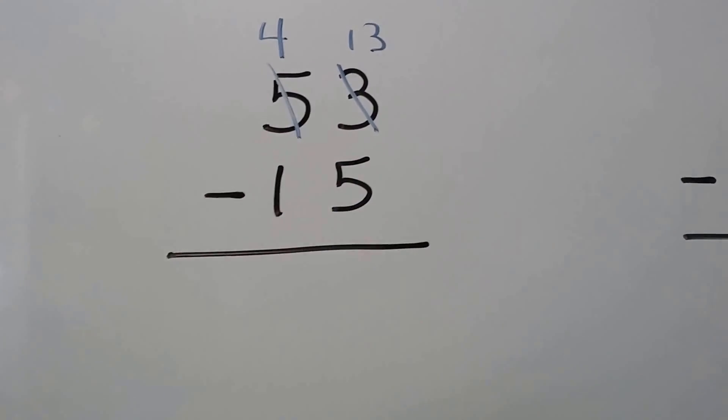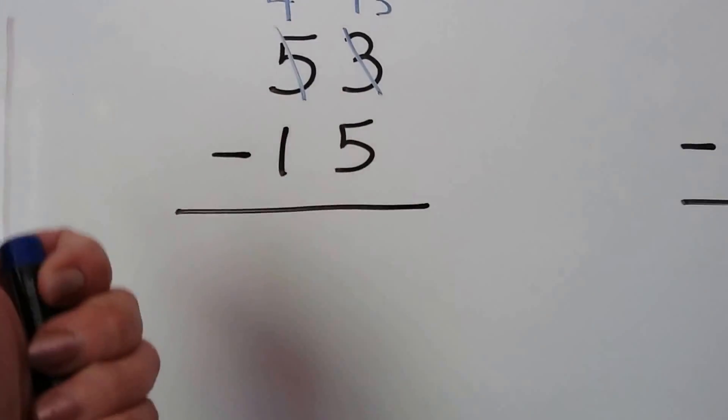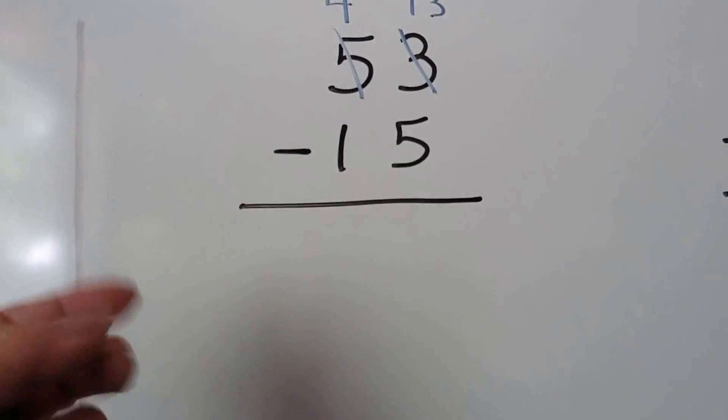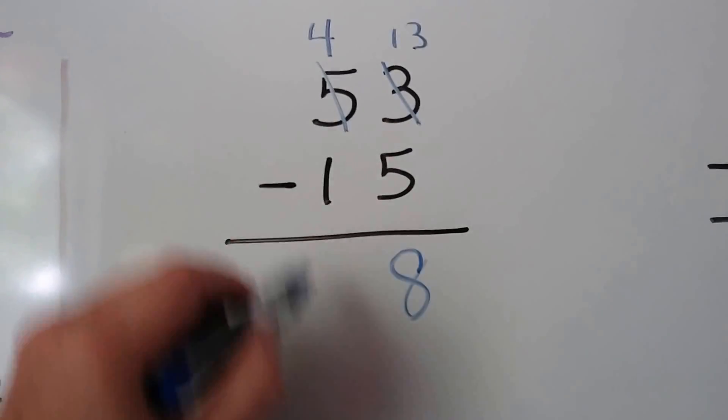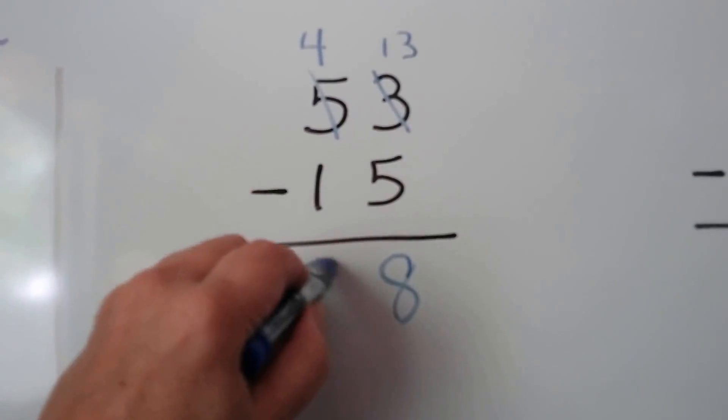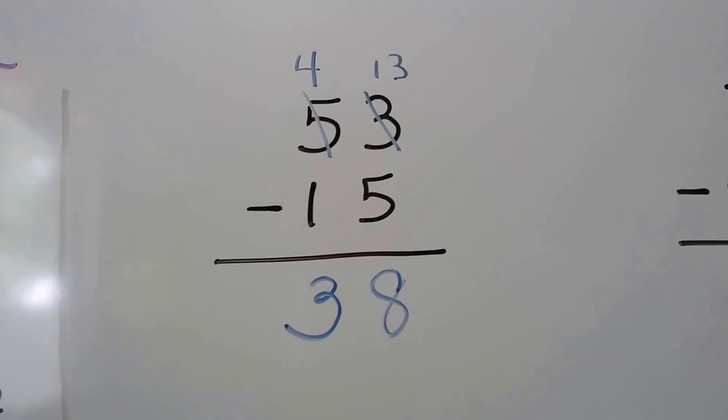13 minus 5 is, we can count up: 5, 6, 7, 8, 9, 10, 11, 12, 13. It's an 8. 4 minus 1 is 3. We get 38.